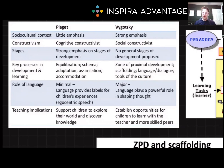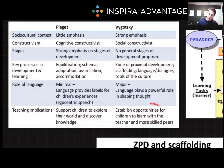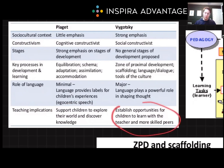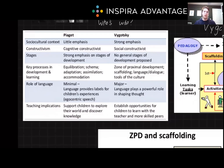The role of language isn't a big deal for the MCAT for either of these theorists, though Vygotsky thinks it is much more important than Piaget does. There are a lot of practical implications that arise from these thinkers. Piaget would say support children to explore their world and discover knowledge, and Vygotsky says something similar: establish opportunities for children to learn with the teacher and more skilled peers. Both of them think children are not yet adults, so they need some help. Vygotsky will do this through scaffolding, which we will talk about in a moment.